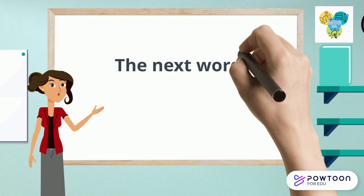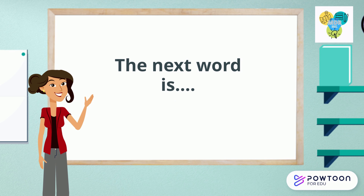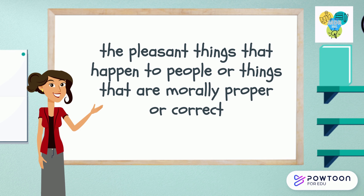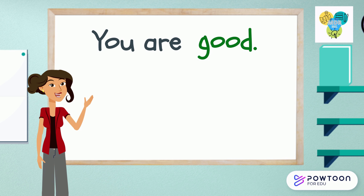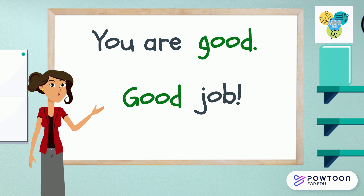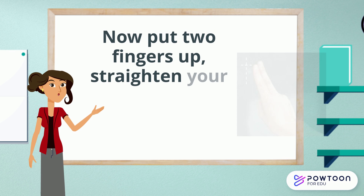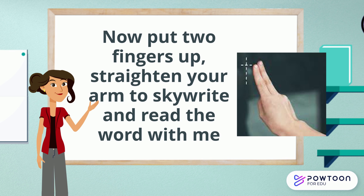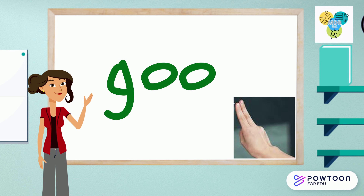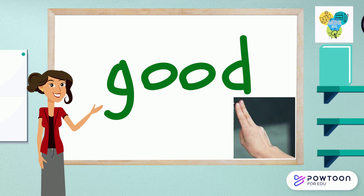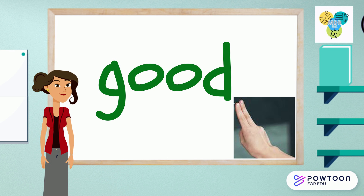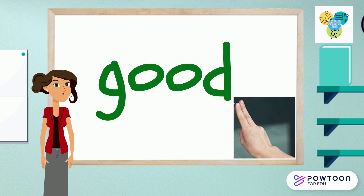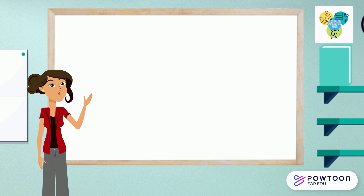The next word is good. 'Good' refers to pleasant things that happen, or things that are morally proper or correct. For example: you are good; good job. Now put two fingers up, straighten your arm to skyline and read the word with me. G-O-O-D, good. G-O-O-D, good. Now you try.